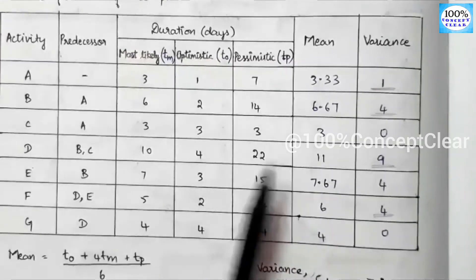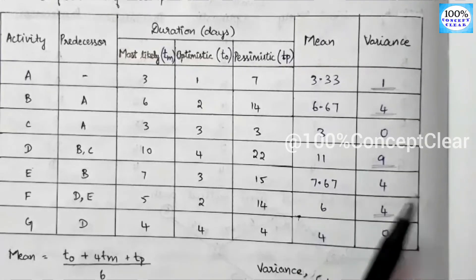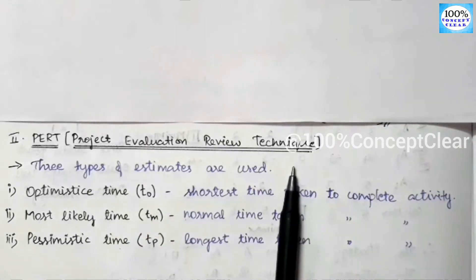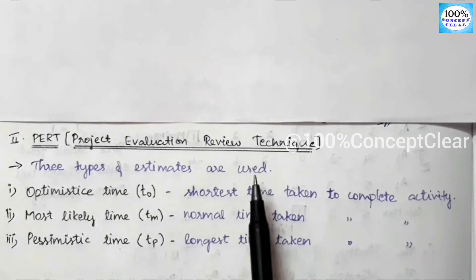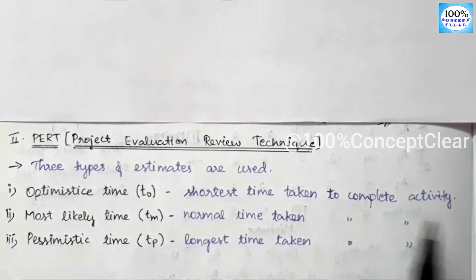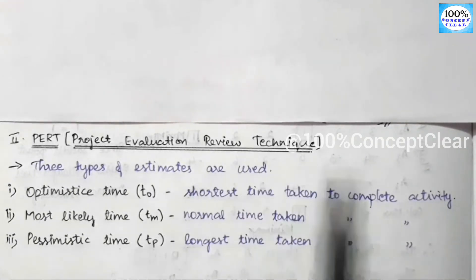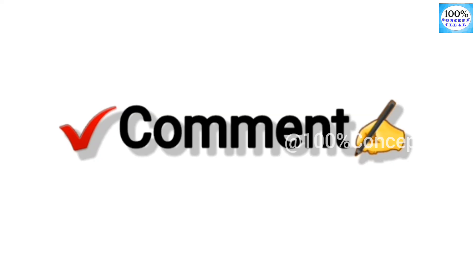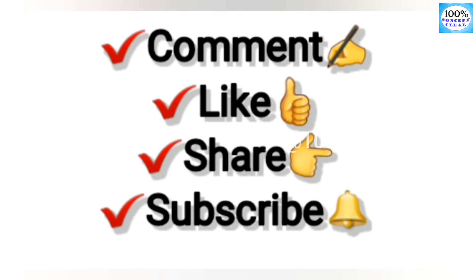Some examples have already been solved — if you want to solve them, there is a link in the description. To summarize, in PERT we have three types of time estimates. If you have any doubts, please comment. Please like this video, share it with your friends, subscribe to our channel, and thank you for watching.